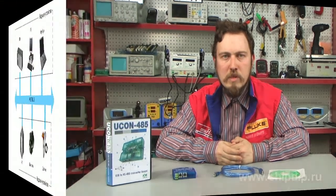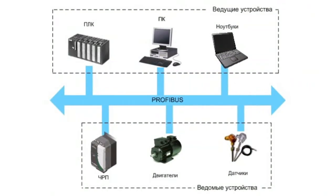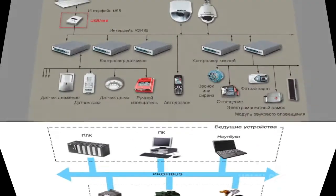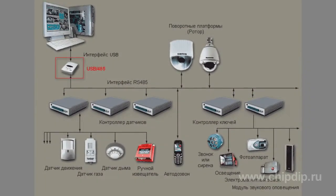This transfer method provides high immunity to common mode interference. RS-485 communication protocol is the most widely used standard in industrial and building automation, where a large number of remote sensors and other devices transmit and receive information through a central module providing access to data users and other processors.